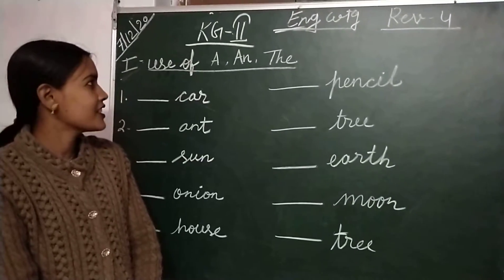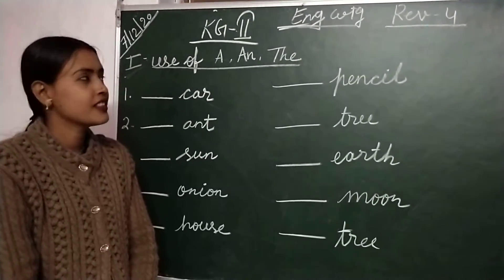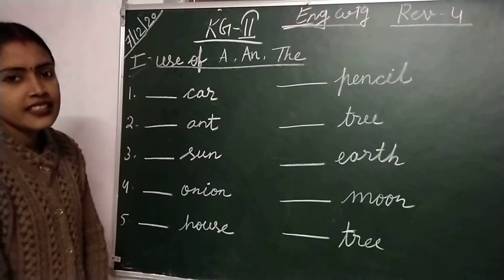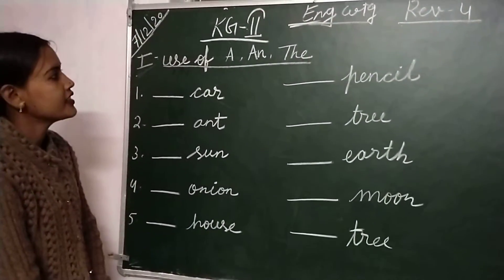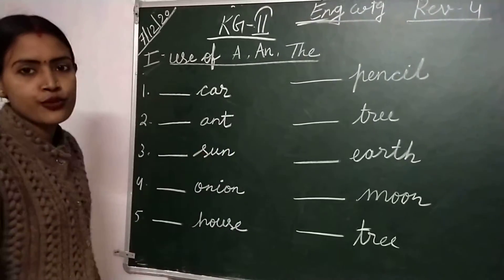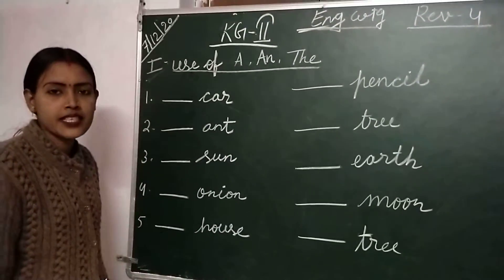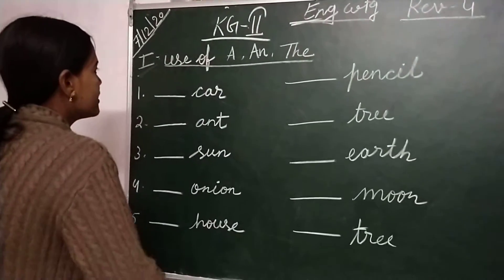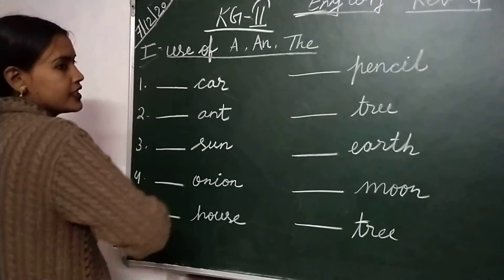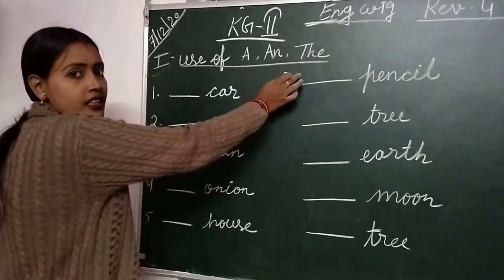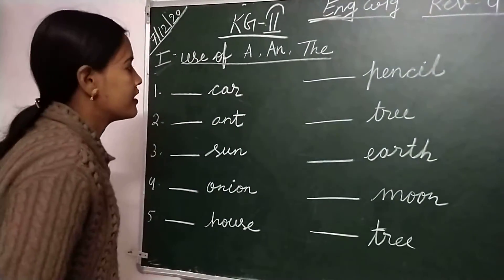Very good morning KG2 children. Hope you are fine. Today going in English writing. This is your epitome 4 from second unit. So children, today's topic is use of a, an, and the.